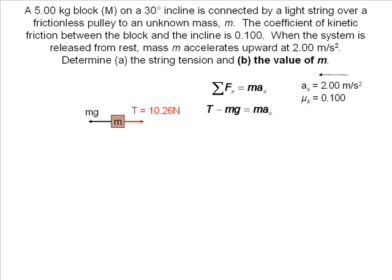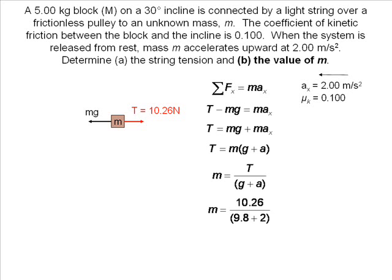We substitute in our variables, rearrange to group the masses together, factor out the mass, and divide both sides by the sum of the acceleration due to gravity and the acceleration of our system. We input our values and find the mass of the small block.